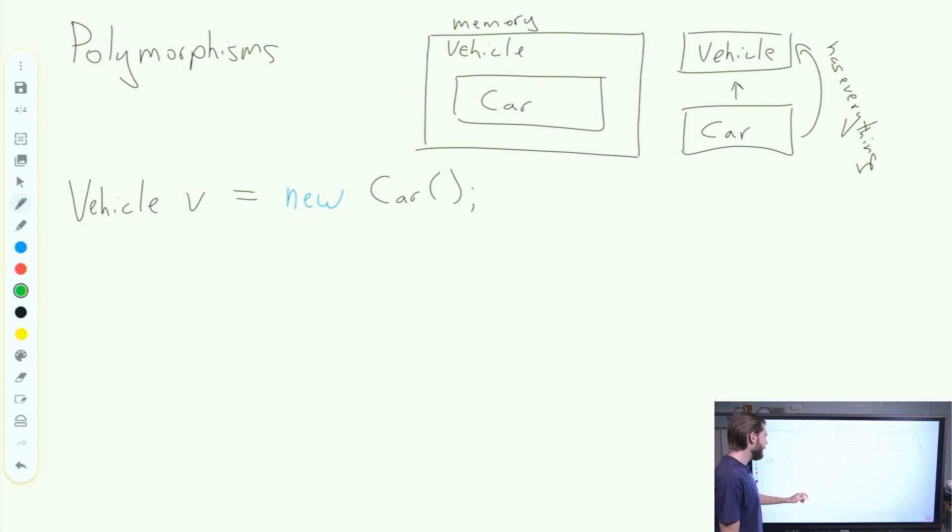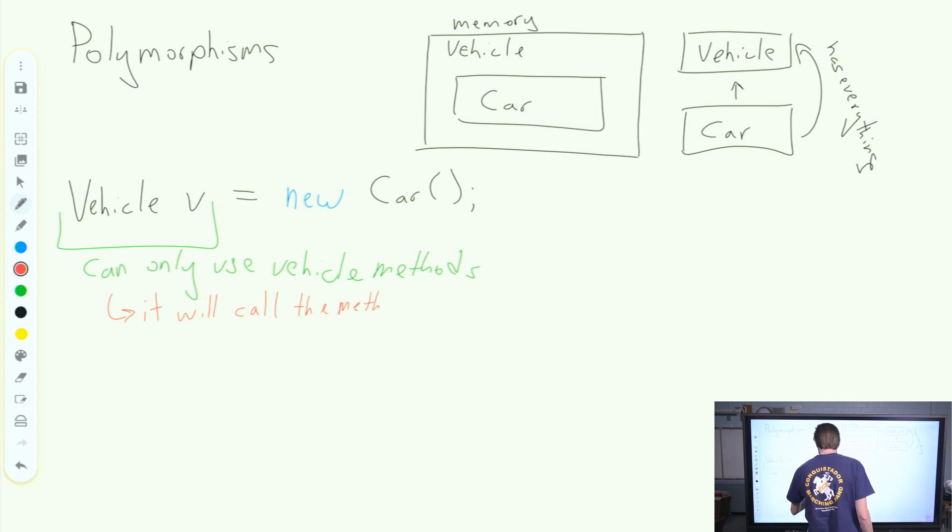However, in this case, whenever I use our V, I can only use vehicle methods. So even though it holds a car object, I can only use vehicle methods on the car.